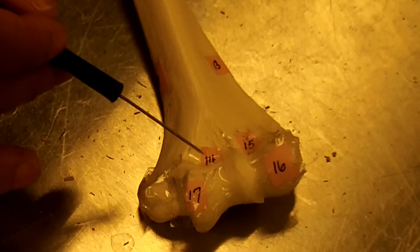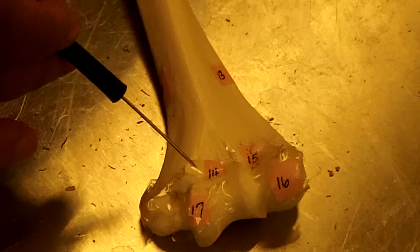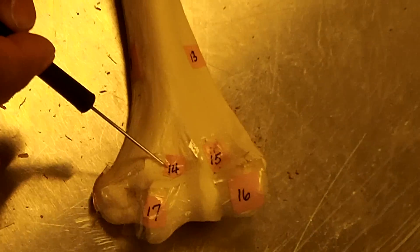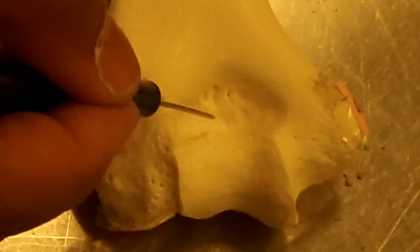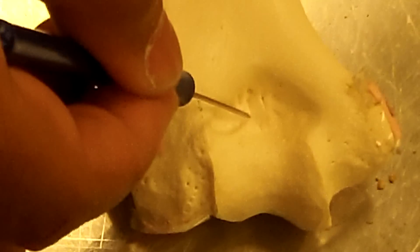Above the condyles are fossae. This particular fossa right here is called the coronoid fossa. This one is called the radial fossa. On this side, you have another fossa. This is the olecranon fossa.